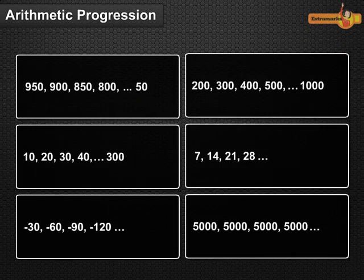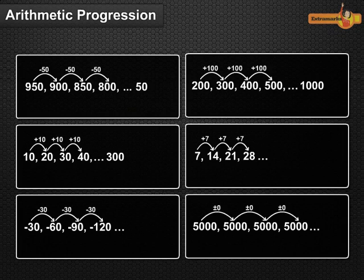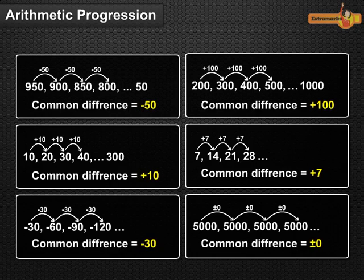In all the lists, we see that successive terms are obtained by adding a fixed number to the preceding terms. Such list of numbers is said to form an arithmetic progression. The fixed number is called the common difference of the AP. Remember that it can be positive, negative or 0.